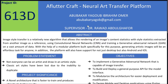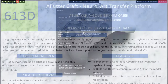Image style transfer is a relatively new algorithm that allows the rendering of an image's content statistics with the style statistics extracted from another image as reference. It uses convolutional neural network layers and trains a generator neural network using those layers on a large amount of data. This project will implement a modular platform specifically designed for this purpose.